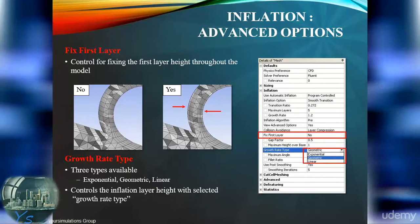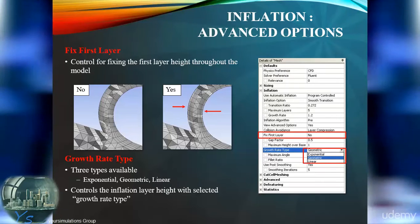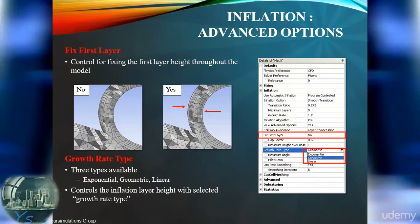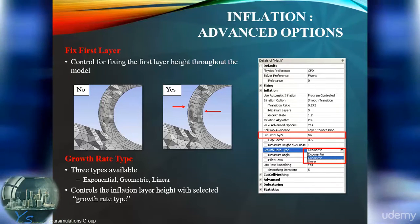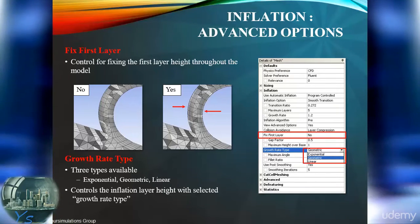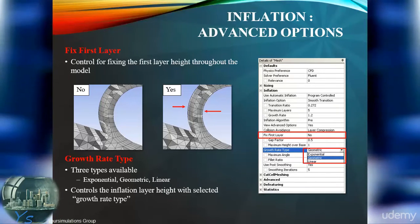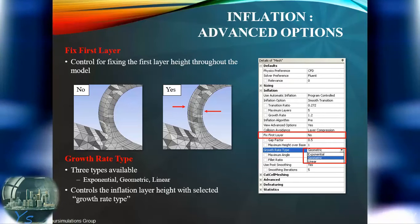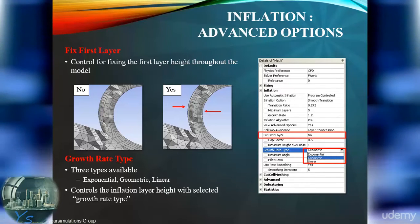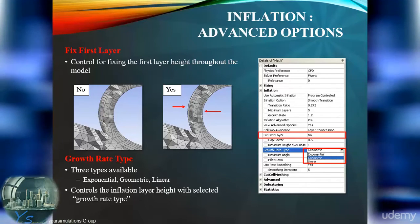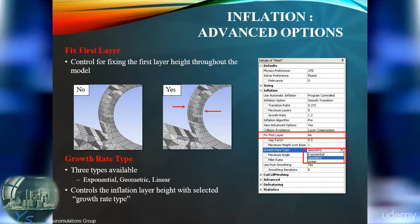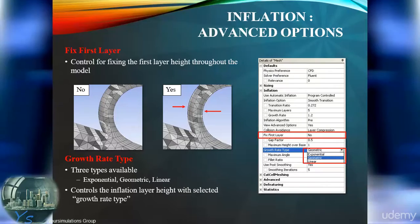The default growth rate type is set to Geometric, which allows smooth growth for each layer. Exponential and linear growth are also available from the drop-down menu.